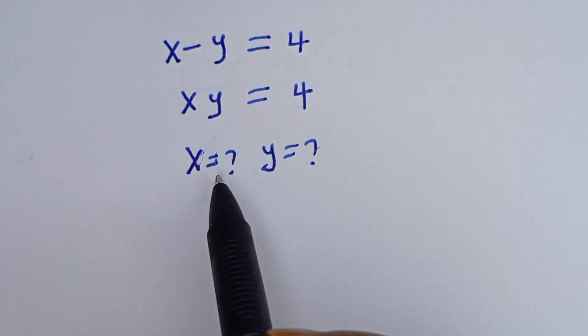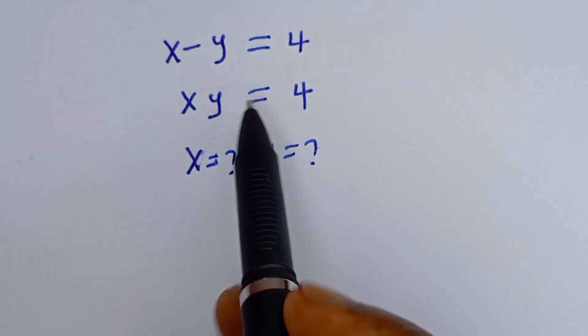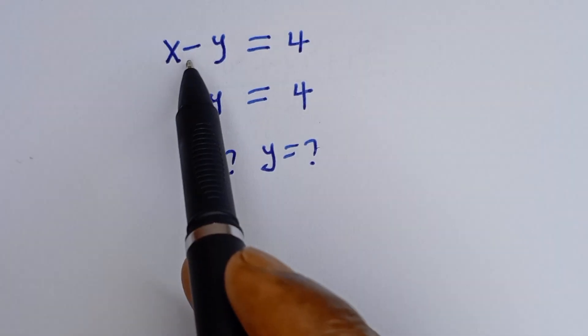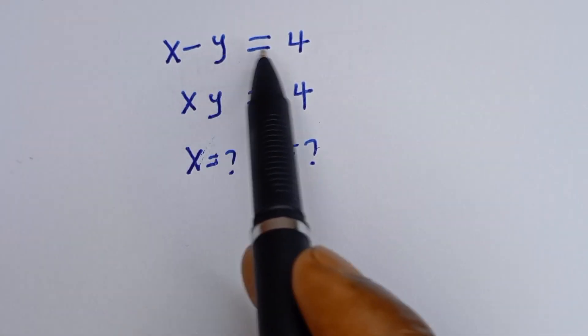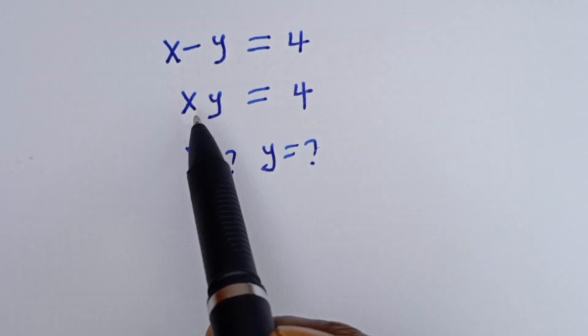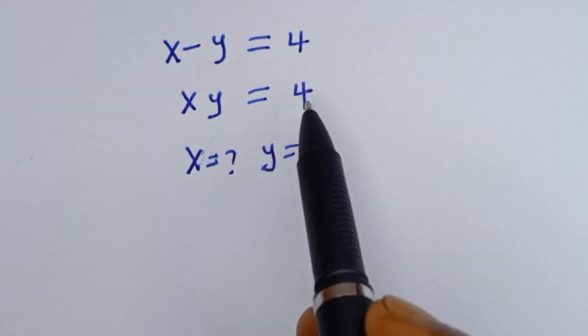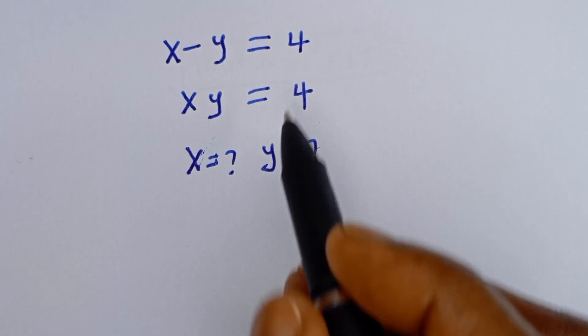Hello. How to solve for S and Y in this equation: S minus Y is equal to 4, and S times Y is equal to 4.